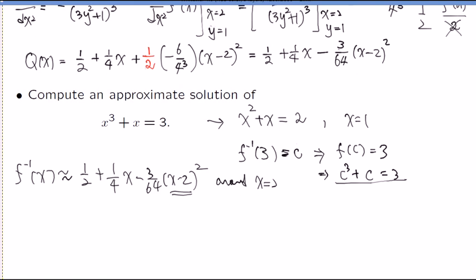Let's do that. C is exactly supposed to be, the c that we are solving for here, is exactly f inverse of 3. But it's approximately equal to 1 half plus 1 fourth times x equals 3 there. And x equals 3, that makes 3 minus 2, 1. So, it's a 3 over 64. Pretty neat.